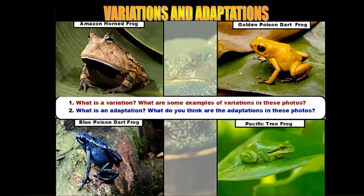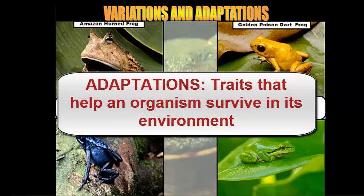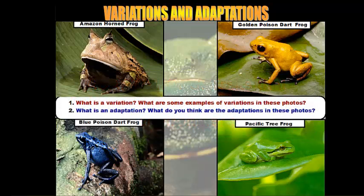These variations lead to characteristics called adaptations. Adaptations are structures or traits that an organism has that allow it to survive in its environment. So these different variations we talked about — body color, foot shape, and eye positioning — are all traits that help these organisms survive.